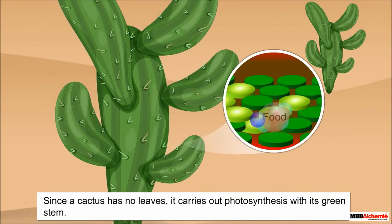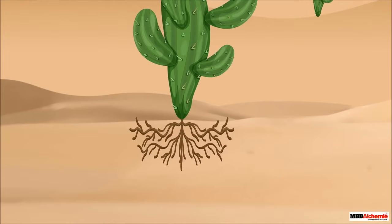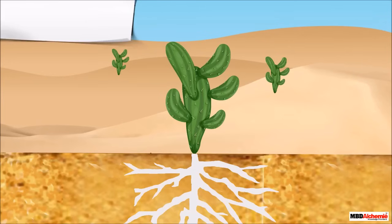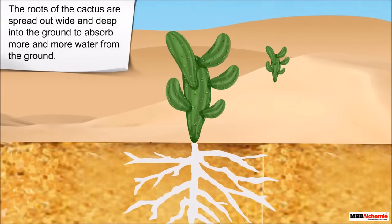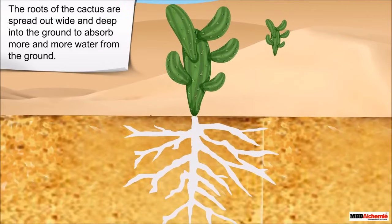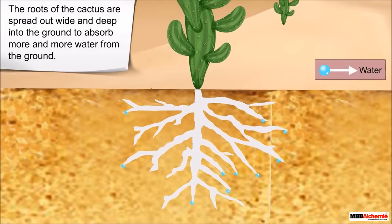Since a cactus has no leaves, it carries out photosynthesis with its green stem. So, the food for the cactus plant is made in its green stem. Just like stem and leaves, the roots of the cactus are also adapted to the desert. The roots are spread out wide and deep into the ground. This helps the plants to absorb more and more water from the ground.